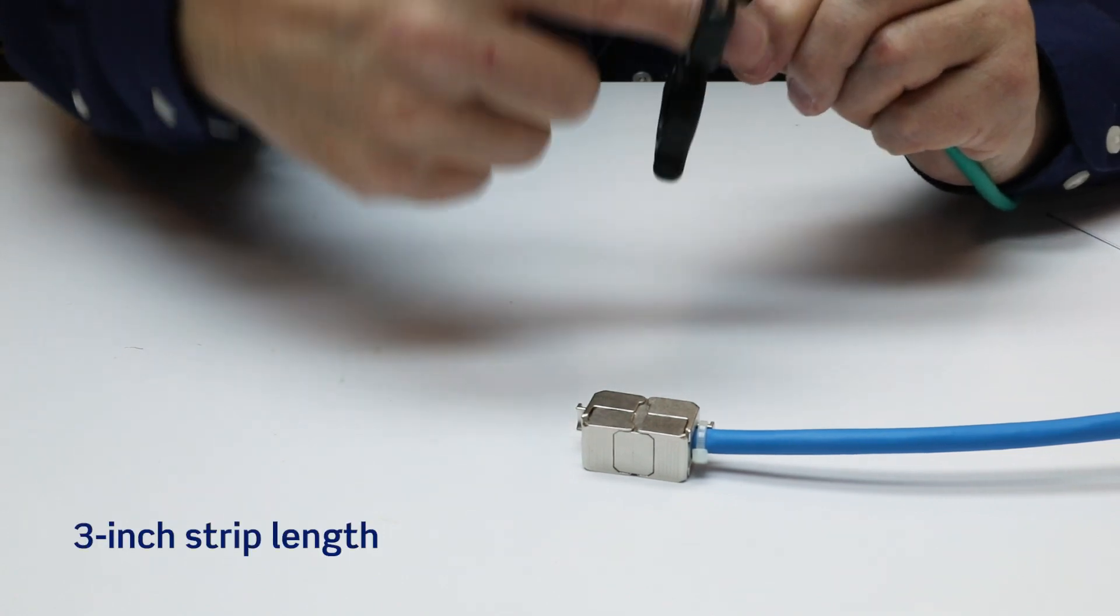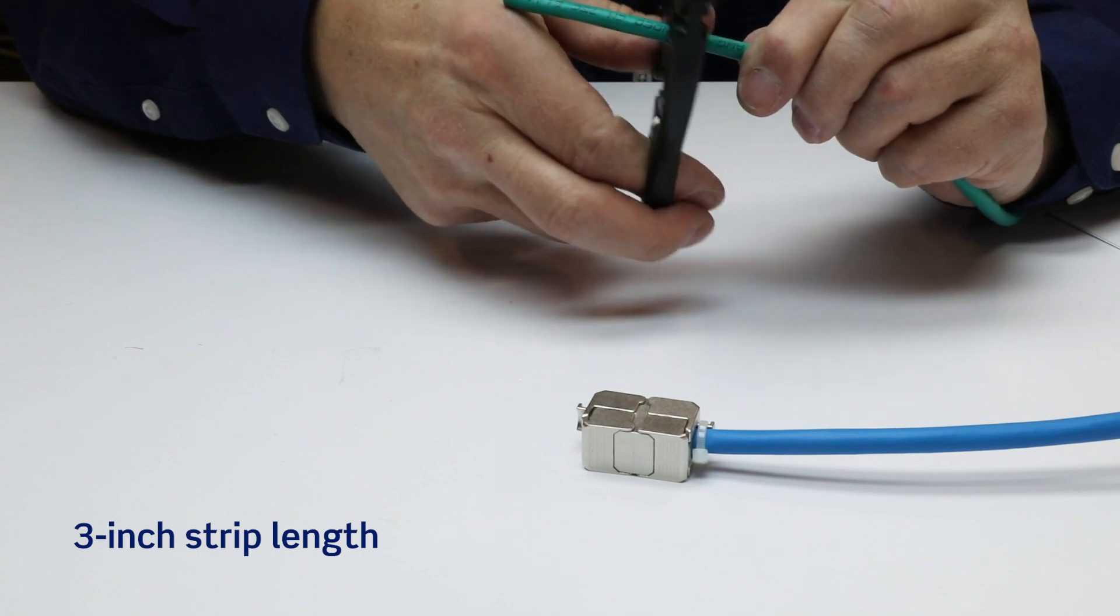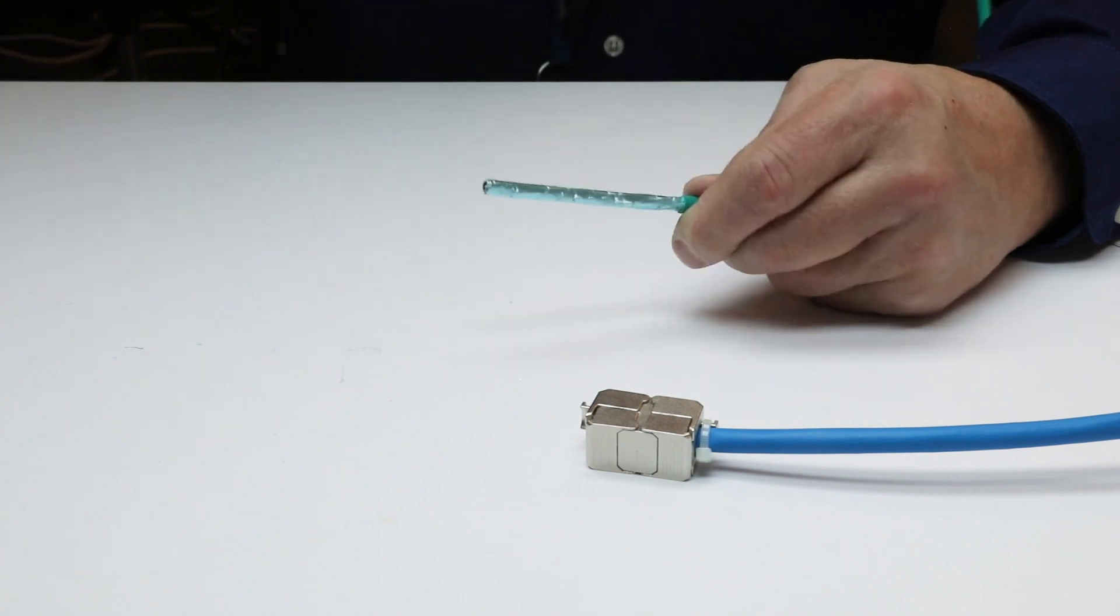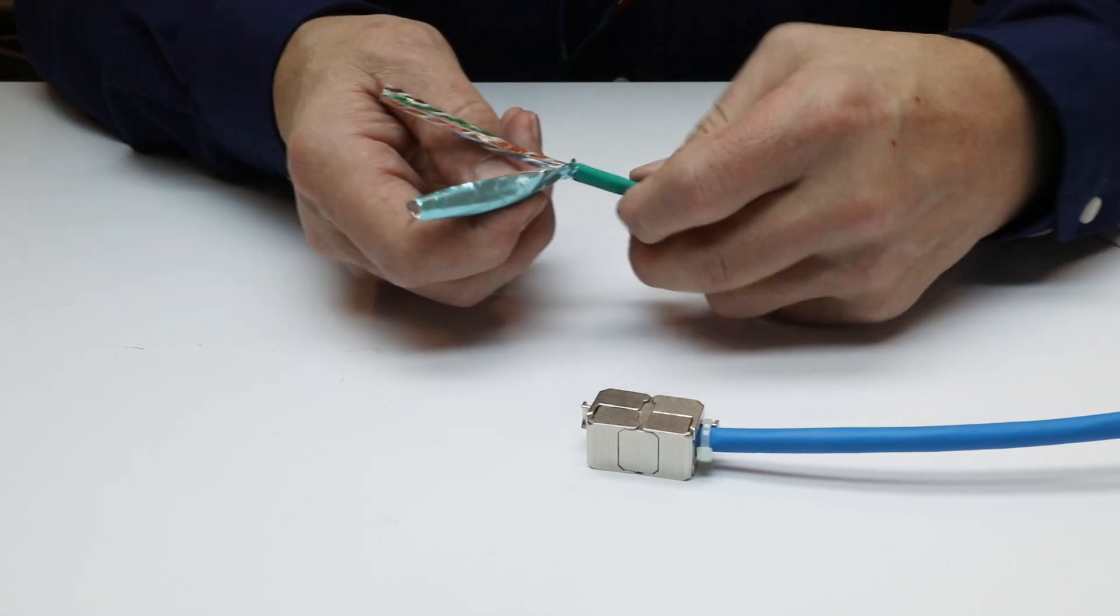strip 3 inches of jacket from the shielded cord, taking care not to nick the foil, the drain wire, or the pair insulation. This exposes sufficient length of drain wire to ensure proper shield termination.